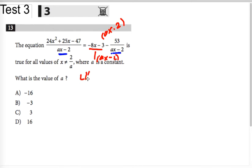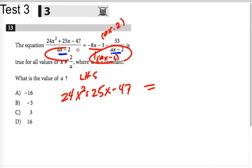On the left-hand side, I have a numerator of 24x squared plus 25x minus 47. I know that since the denominators are now just going to be this ax minus 2, when I foil out this numerator, they have to be equal, the two numerators, so minus 53.